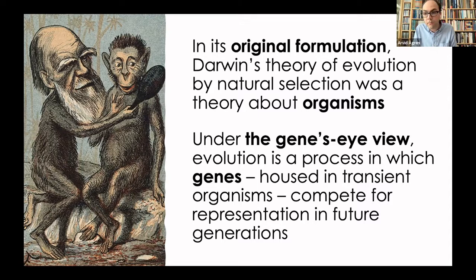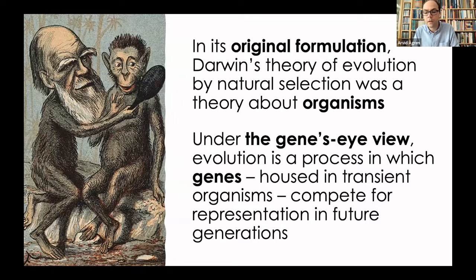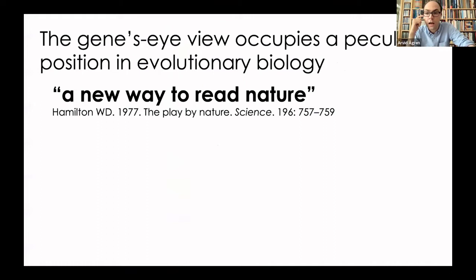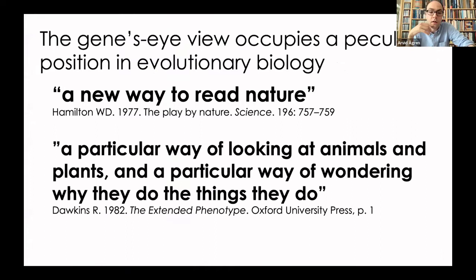The gene's eye view occupies a rather peculiar position in biology. It is not a straightforward empirical hypothesis that can be rejected or verified by a clever experiment, though it can help us develop good experiments. It is also not a general mathematical framework, though it can help us develop formal versions of specific arguments. Rather, it is something more like a way of thinking. Bill Hamilton, when reviewing The Selfish Gene, described it as 'a new way to read nature.' Similarly, Dawkins described it as a particular way of looking at animals and plants and wondering why they do the things they do.